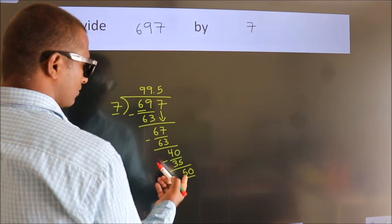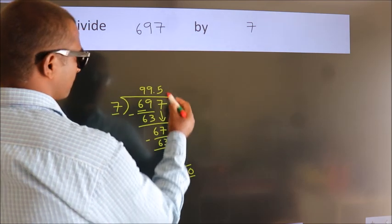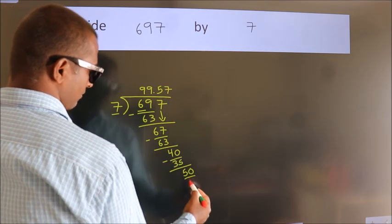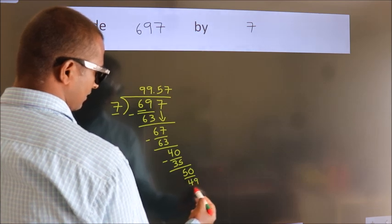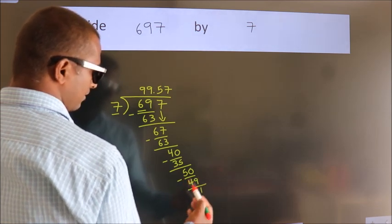A number close to 50 in the 7 table is 7 sevens, 49. Now we subtract. We get 1.